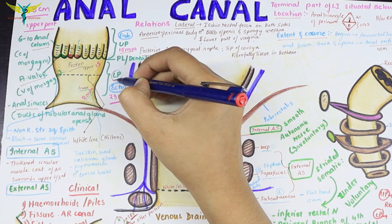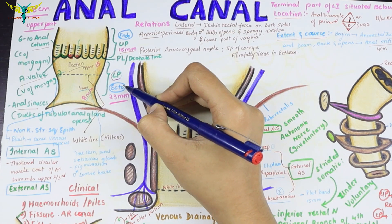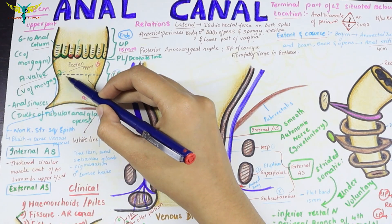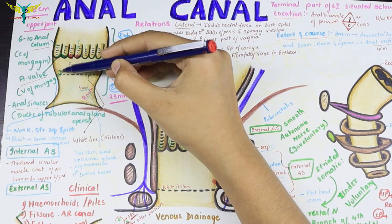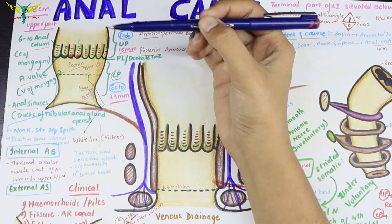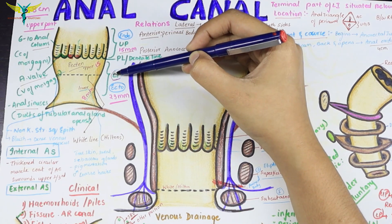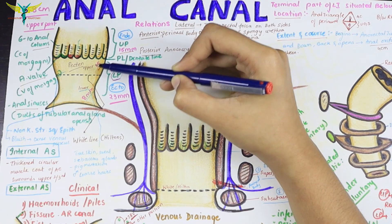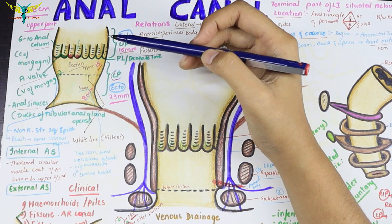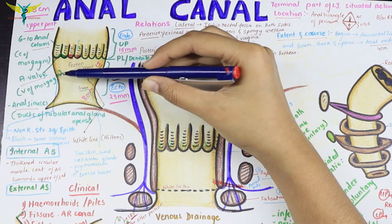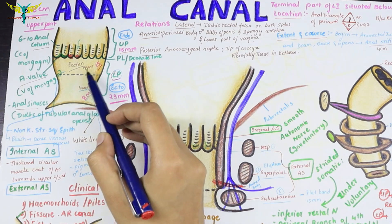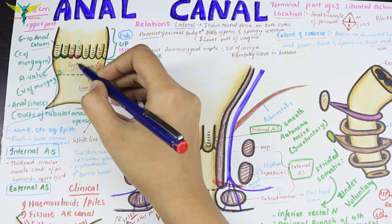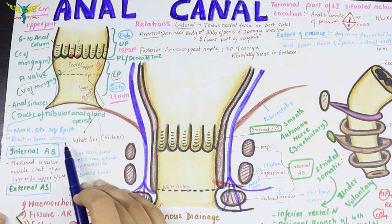The lower part of the anal canal is ectodermal in origin and 23 mm in length. It is further divided into two regions by the white line, or Hilton's line. The upper region is about 15 mm and the lower region is about 8 mm. The upper region is lined by non-keratinized stratified squamous epithelium and is bluish in colour due to the presence of dense venous plexuses.